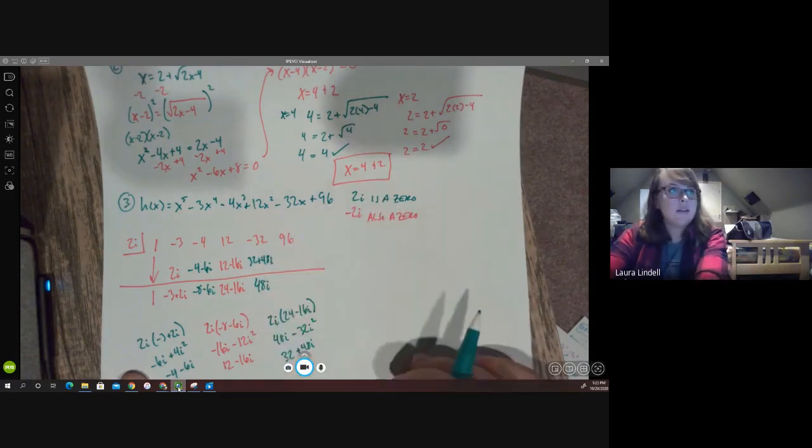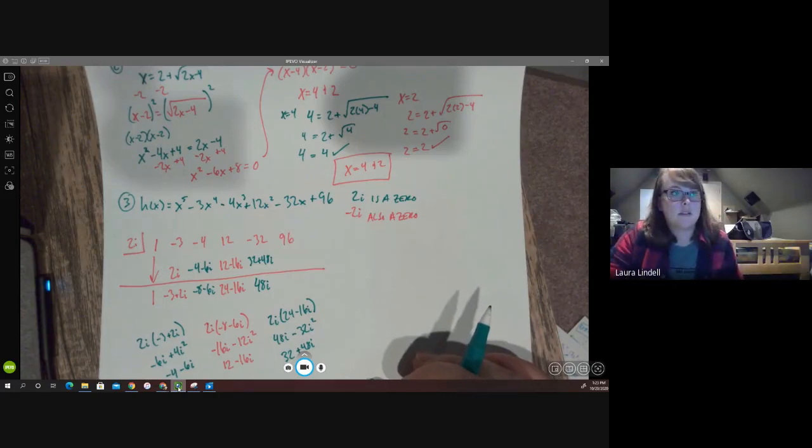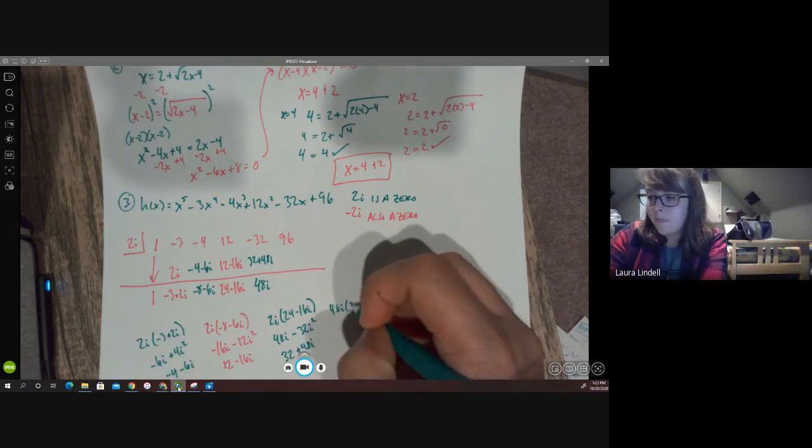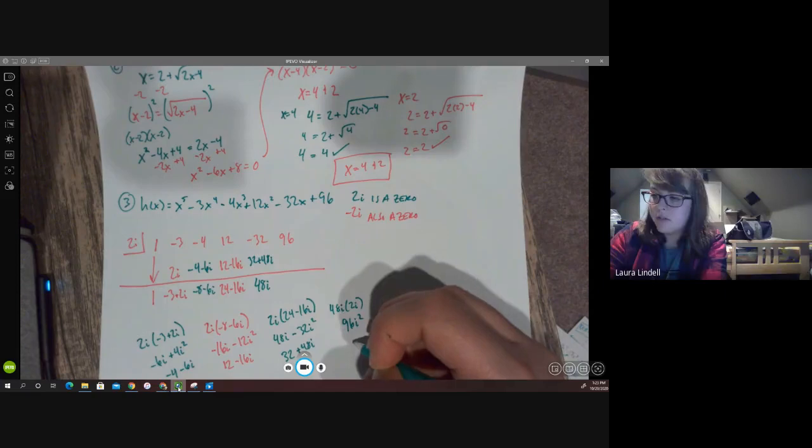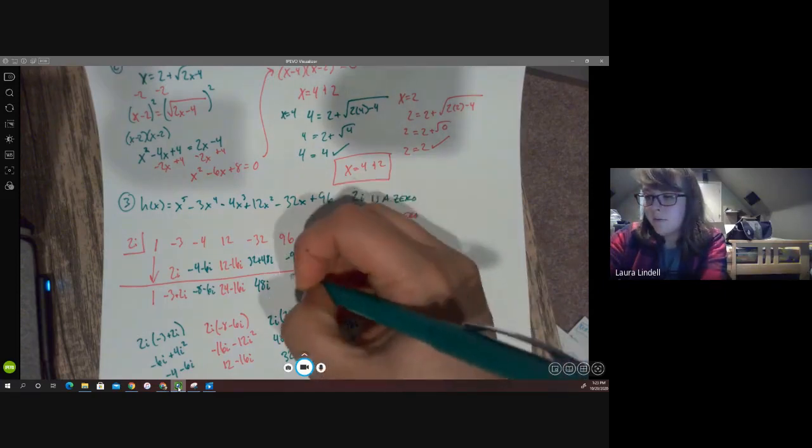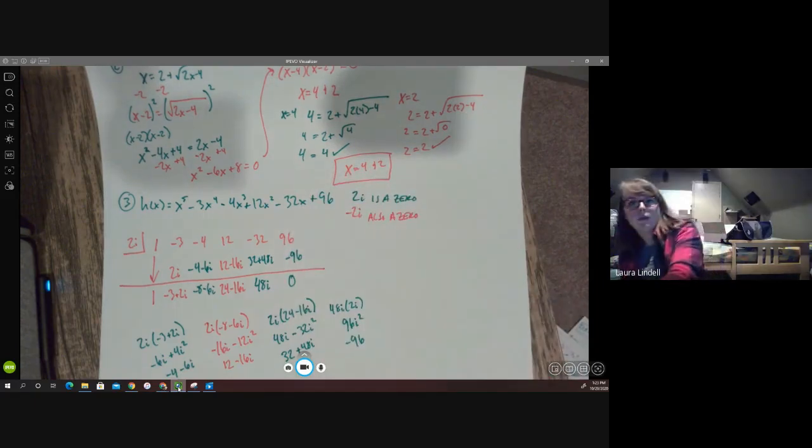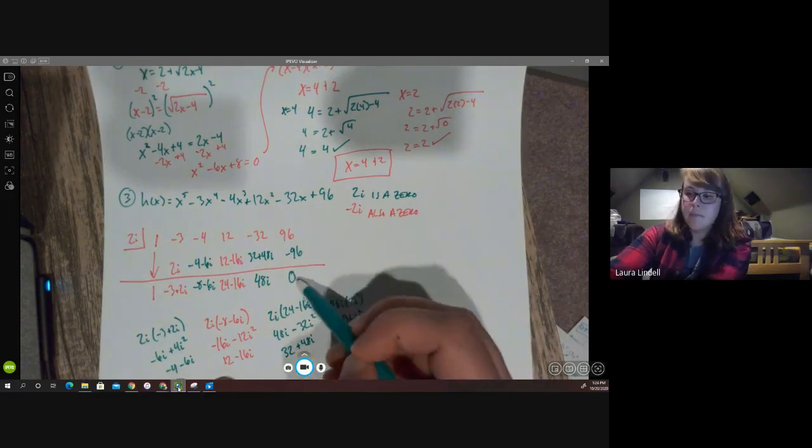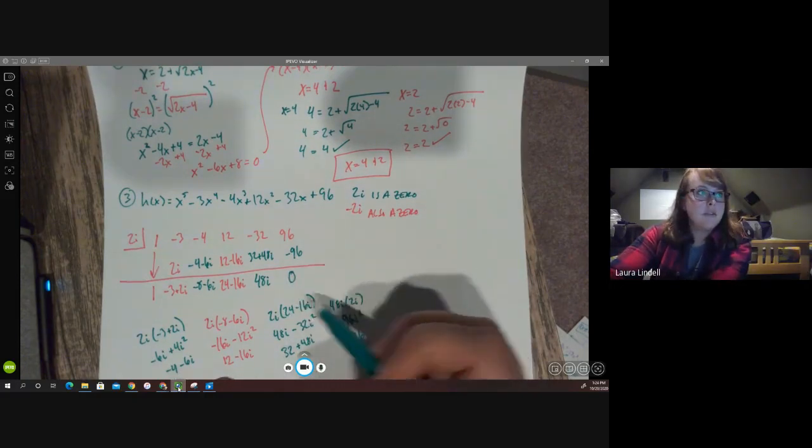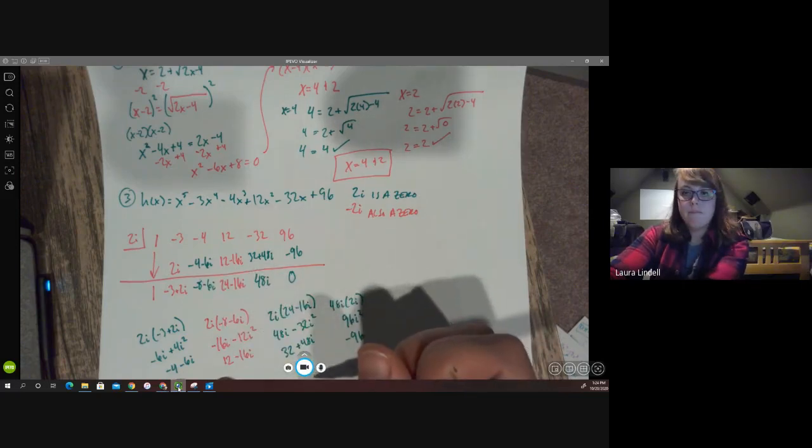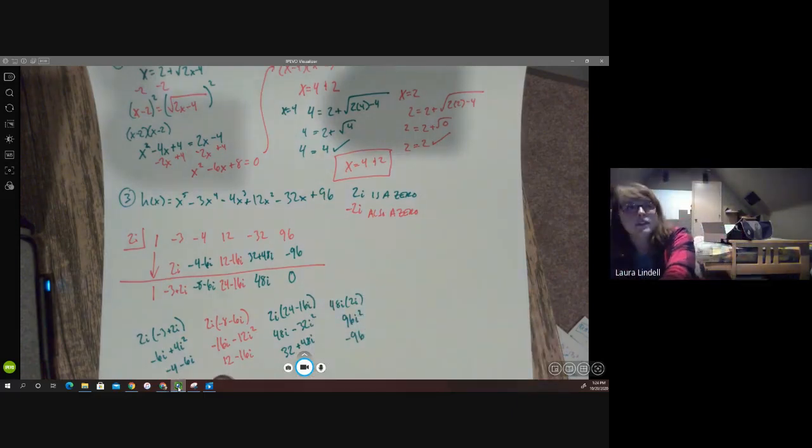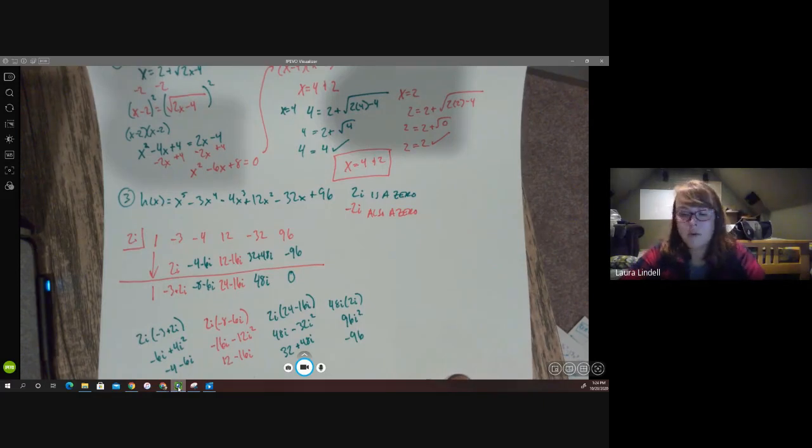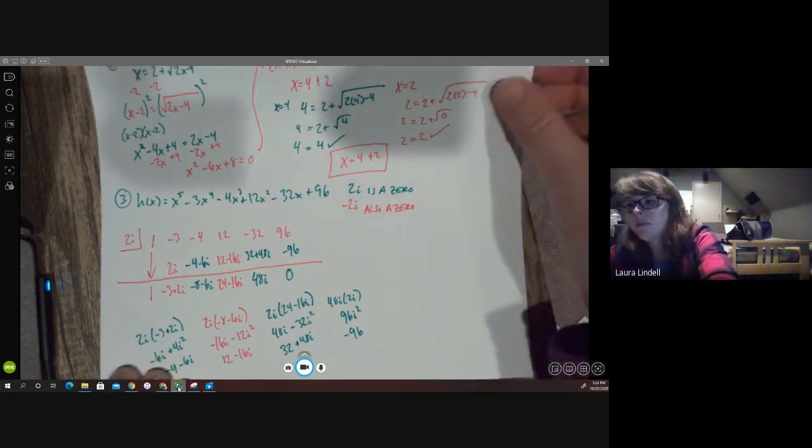Then we're going to do some more multiplication here. 2i times 24 minus 16i. Doing our distributing, we get 48i minus 32i squared. And then remembering this is, i squared is negative 1. So this is really positive 32 plus 48i. Which works out nicely because negative 32 plus 32 is 0. So we're just left with 48i when we bring that down. And then we do our last bit of multiplying here. 48i times 2i gives us 96i squared, which is also known as negative 96. So we add those and get 0. Which is what we would like to have happen because if this wasn't a 0, then this wouldn't be a factor, which would be a problem. So if you end up down here at the bottom and this is not a 0, then you should go back and check your work and figure out where something went wrong.